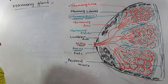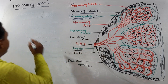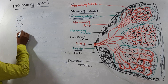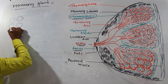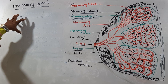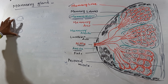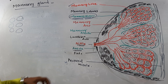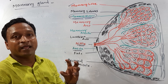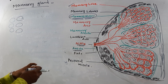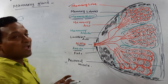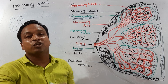The mammary alveoli produce milk. Individual alveoli resemble grapes, and when combined they form a mammary lobule with a cluster-of-grapes structure.